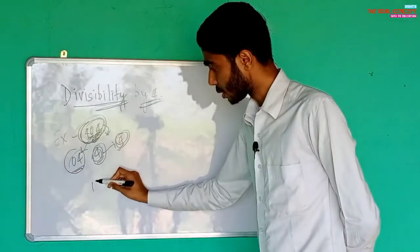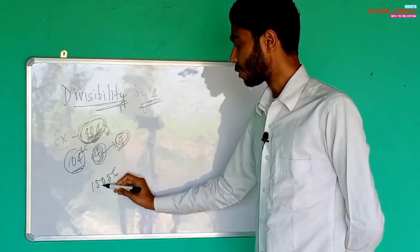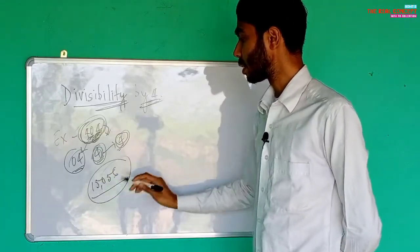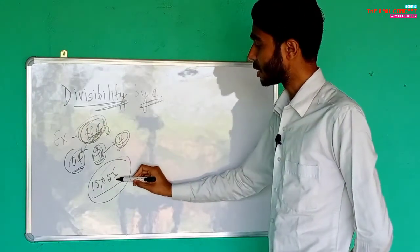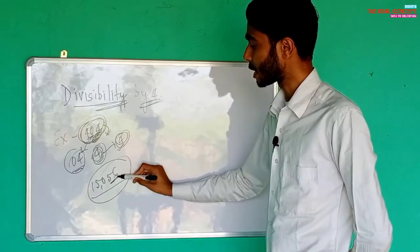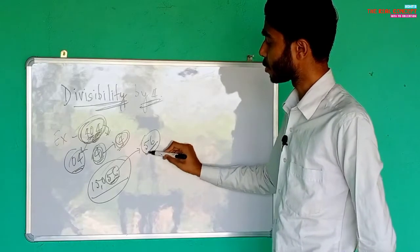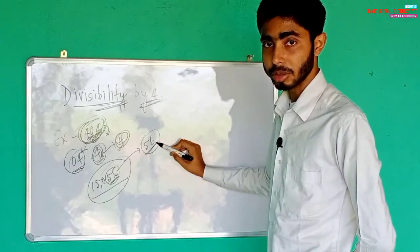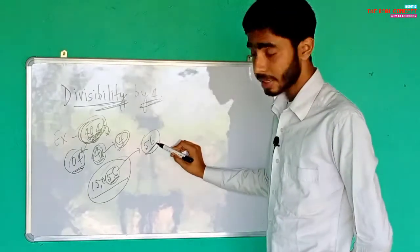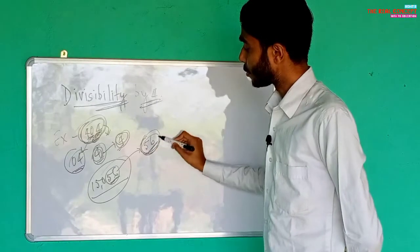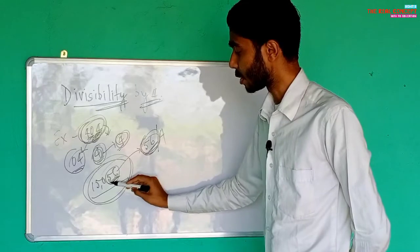Let's take another example: 15056. To check if 15056 is divisible by four, we look at the ones and tens place. The number formed by the ones and tens place is 56. Is 56 divisible by four? Fifty-six divided by four is fourteen. Yes, 56 is divisible by four, so 15056 is completely divisible by four.